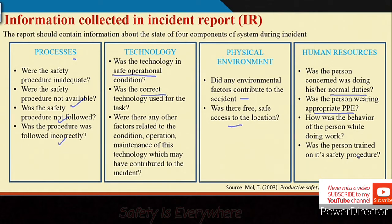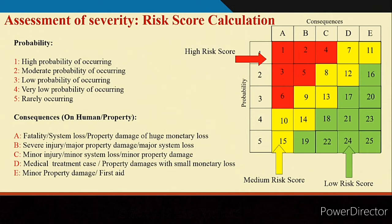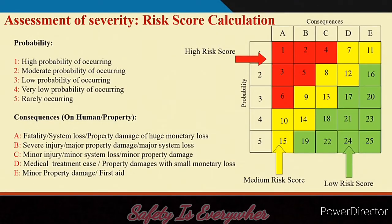Root causes can be further classified in terms of process, procedures, technology, physical environment, human resources, and other things. When an incident takes place, it is logged onto the system — either online or offline — and the risk of that particular incident is calculated. There are many ways of computing risk; one commonly practiced in good industries is using probability and consequences.